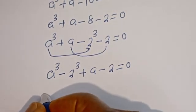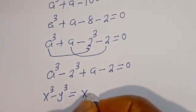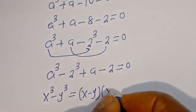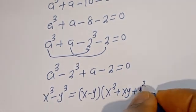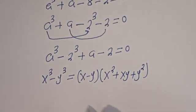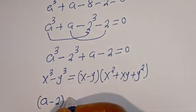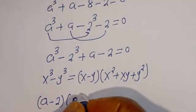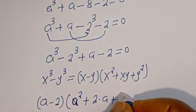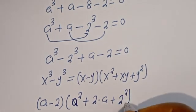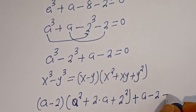Now take note that if you have S to the power of 3 minus Y to the power of 3, this is equal to (S minus Y)(S squared plus SY plus Y squared). Then A to the power of 3 minus 2 to the power of 3 can be written as (A minus 2)(A squared plus 2A plus 2 squared), plus A minus 2 is equal to 0.